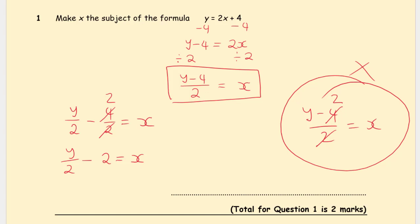You don't want to create any extra work because it is worth two marks, and the question is not asking you to write it in a certain form. So we're going to leave it as x equals (y minus 4) over 2.